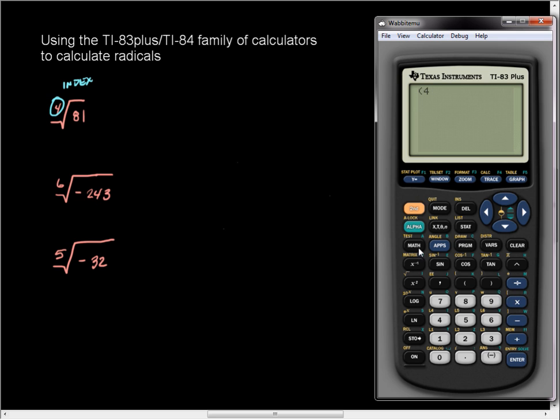Then, I press my math key, and option number five is called the Xth root, and the Xth root is going to look at immediately in front of it for the number or the index of the root. And so I can scroll down and press enter, or I can just select five, and it'll put me back to the home screen.